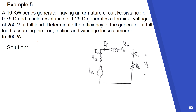So first, what is the requirement in this problem? We would like to find the efficiency of the generator. Efficiency, or eta, is equal to the power output of the generator over the input power. The power output here is given as 10 kilowatt.